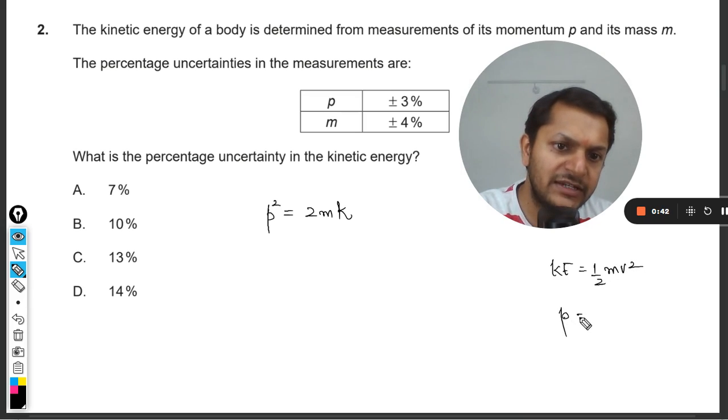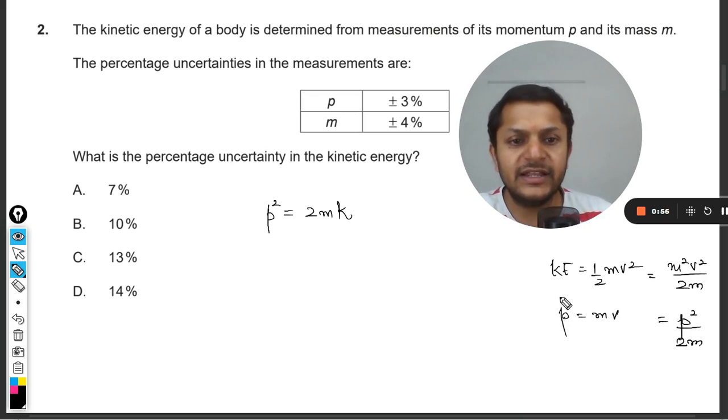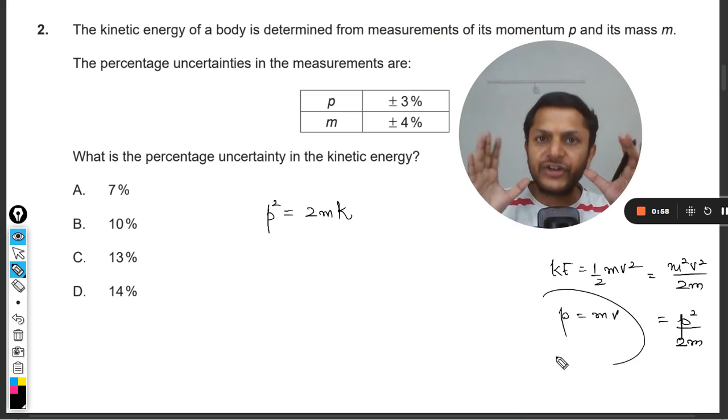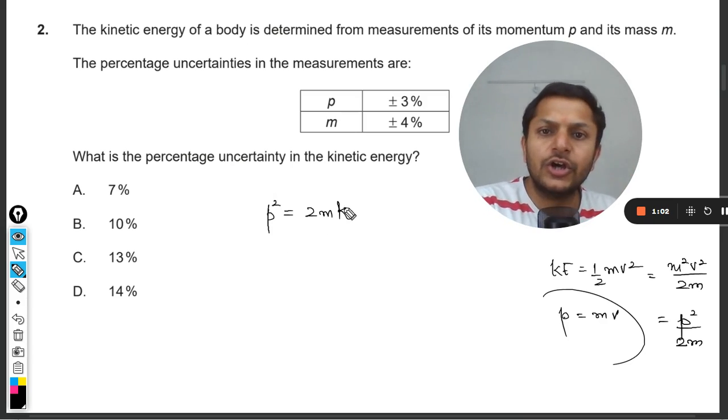Like kinetic energy is equal to half mv², and momentum is equal to m times v. So we multiply m to the numerator as well as the denominator, thereby it will become mv² over 2m. mv can be substituted as p, and it will become p² by 2m. So clearly it's a very easy derivation.